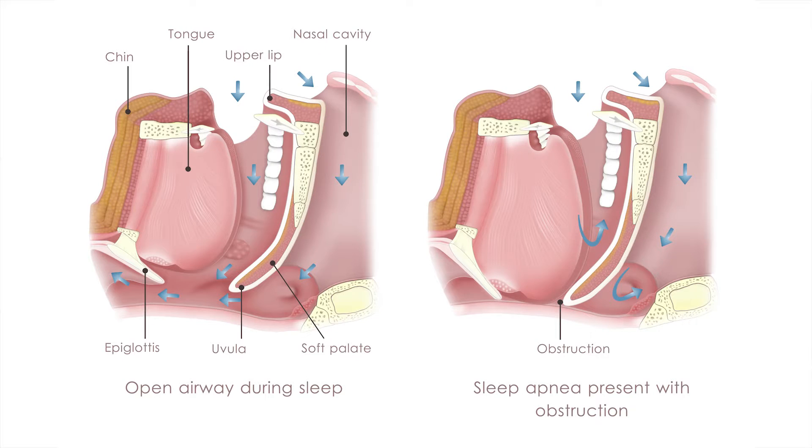Obstructive sleep apnea is one of the most common breathing problems, and it happens while you're sleeping. Basically, when your throat muscles relax, it blocks your airway and you stop and start breathing again. When this happens, your brain is not getting enough oxygen, and your brain sends a message for you to continue breathing — so you're essentially gasping for air. You can see the difference between snoring and sleep apnea: with sleep apnea, you're getting oxygen back to your brain in a desperate, gasping way instead of just snoring.